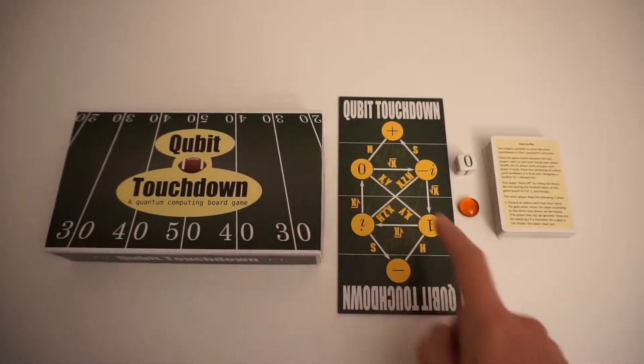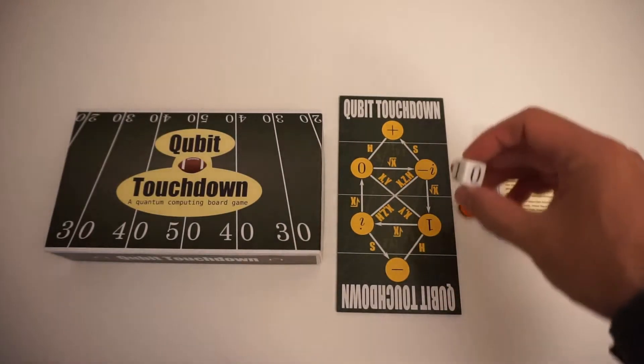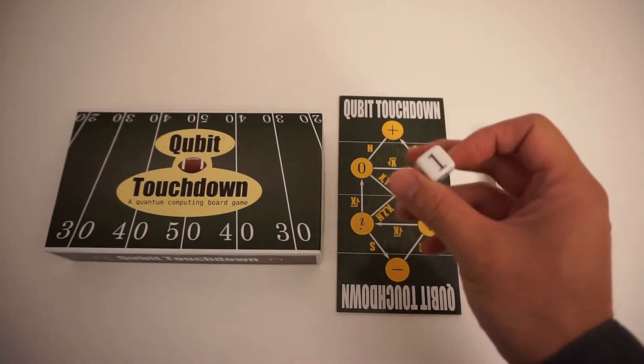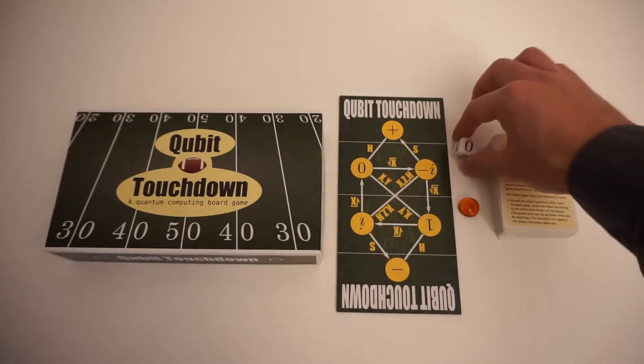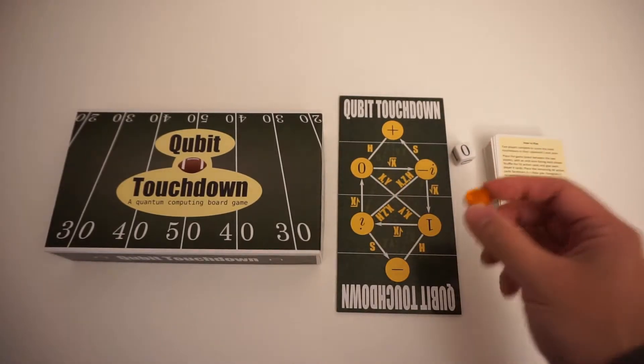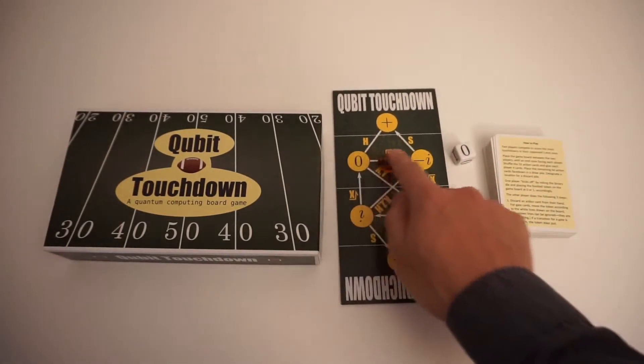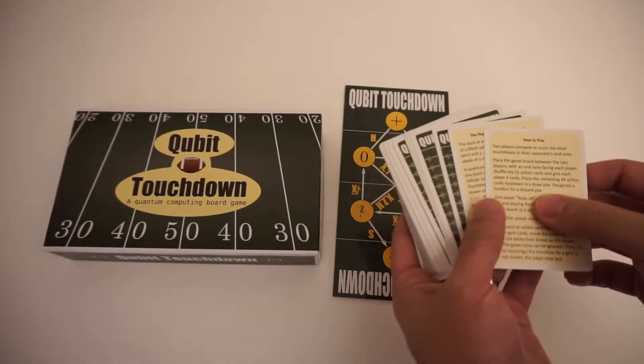Let's start with what comes in the box. There's a game board, a binary die that just has zero and one as the possible outcomes, there's a football token that moves around on the board, and then there is a set of cards.